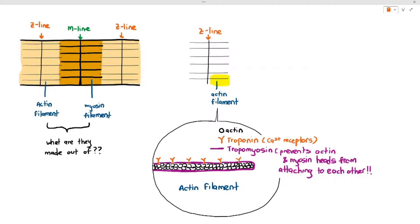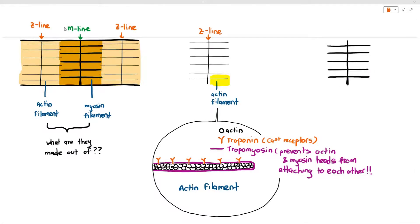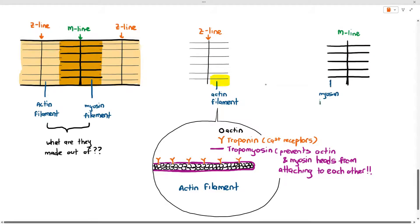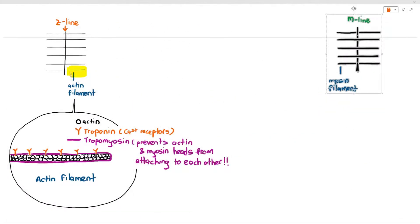Now what I'm going to do is I'm going to take out the other structure. You can see the m-line and the m-line is holding the thick filaments together and we know that the thick filaments are referred to as myosin filaments.